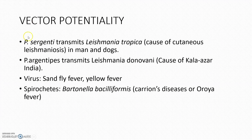Regarding vector potentiality: Phlebotomus sergenti transmits Leishmania tropica, the causative agent for cutaneous leishmaniosis, and Phlebotomus argentipes transmits Leishmania donovani, the causative agent for Kala azar. Sometimes they also act as vectors for viral diseases such as sandfly fever and yellow fever, and they carry spirochetes, producing spirochetosis caused by Bartonella bacilliformis.